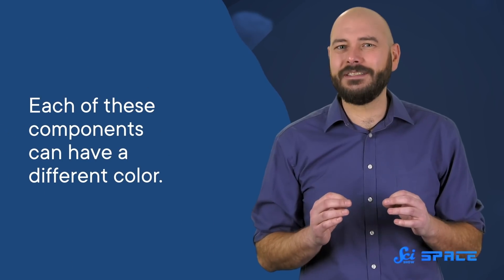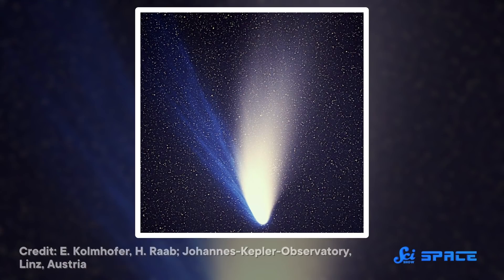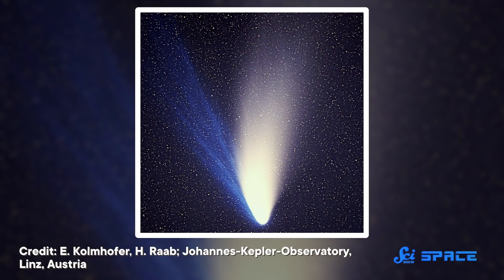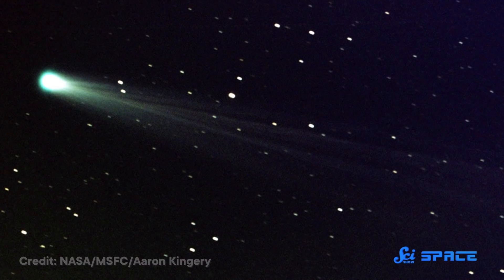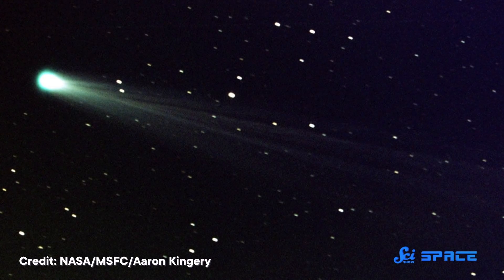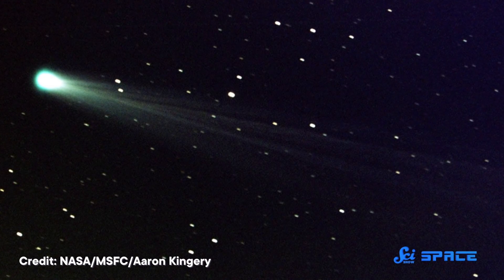What makes comets so intriguing is that each of these components can have a different color. A dust tail reflects sunlight, giving it a yellow-white hue, while the carbon monoxide molecules in the ion tail emit their own light with a ghostly blue color. The coma also emits its own light, but rather than blue, it can shine bright green.